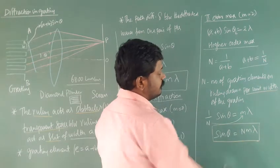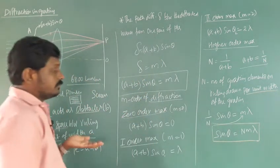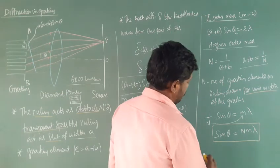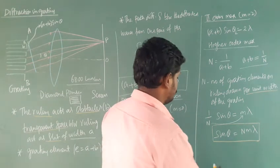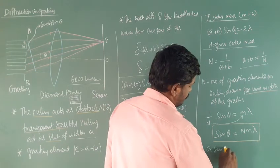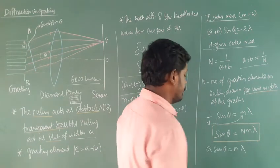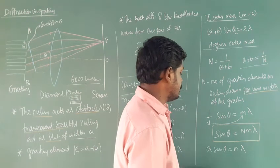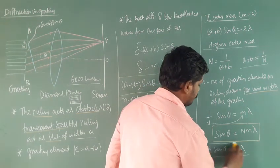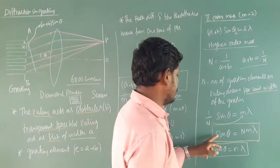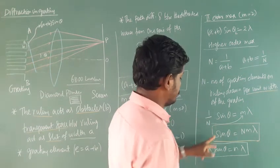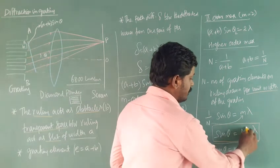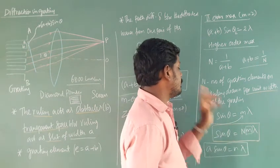This is the diffraction maximum formula for a grating. For comparison, for a single slit the condition for minimum is A sin theta equal to n lambda, where n is the order. For the grating maximum we have sin theta equal to m n lambda. Lambda is the wavelength of light, which must be comparable to the slit width for a diffraction pattern to appear.